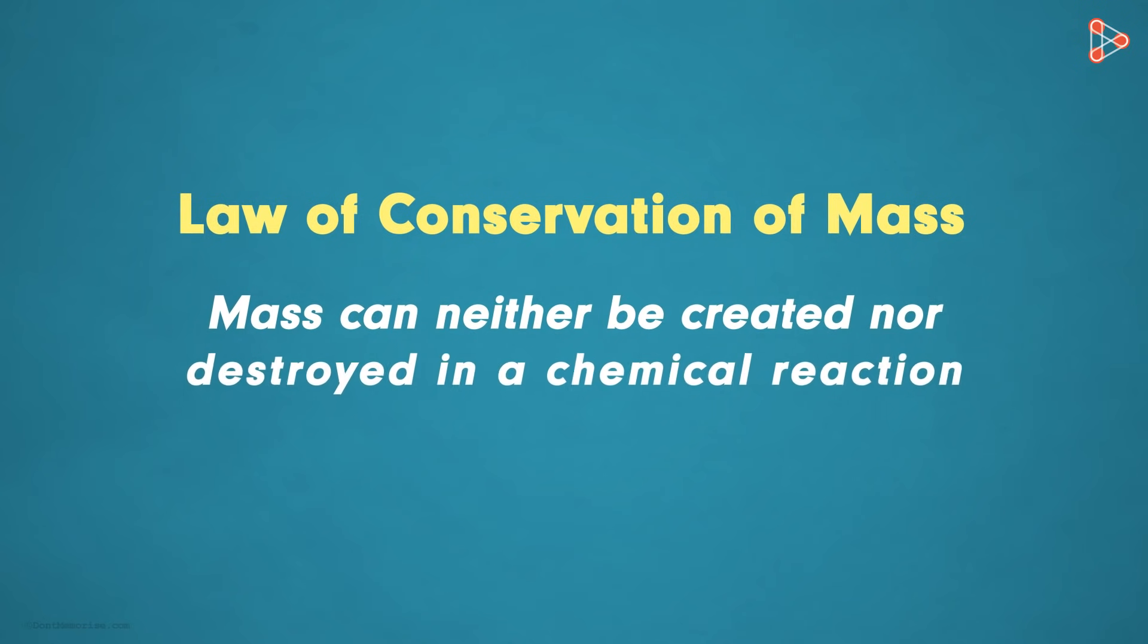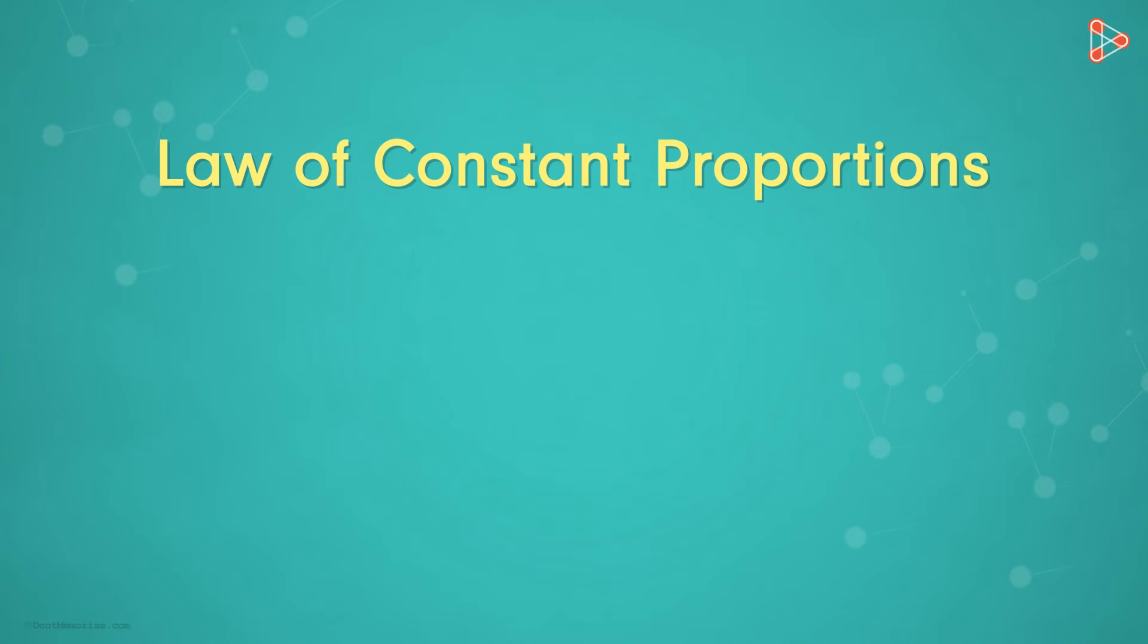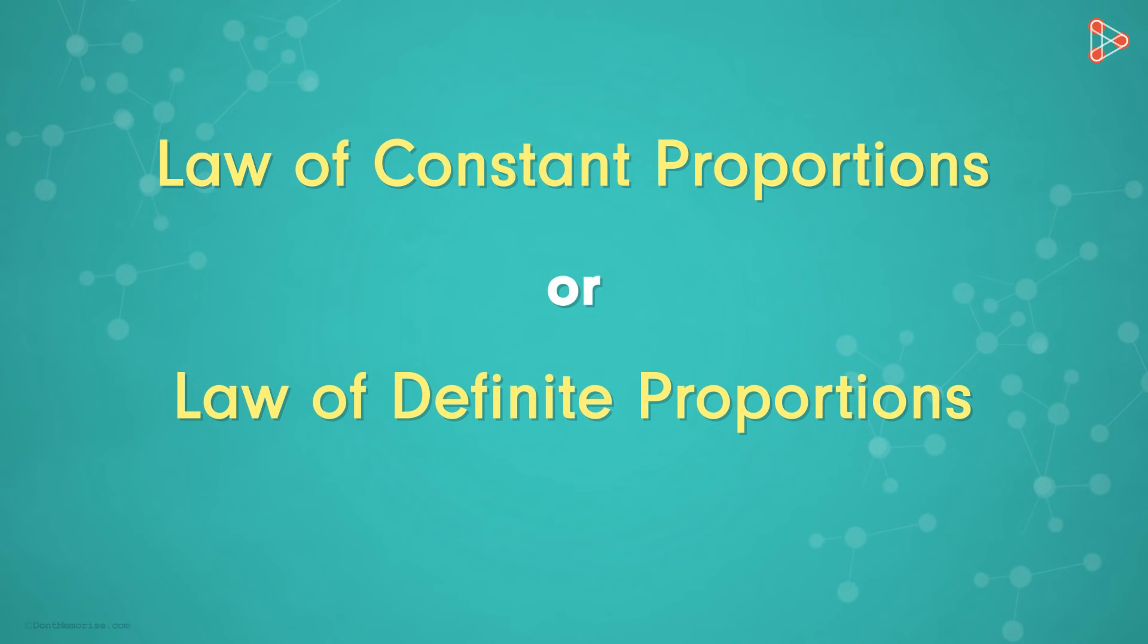We concluded the previous video by understanding the first law of chemical combination. Now we need to take a look at the second law which is called the Law of Constant Proportions or the Law of Definite Proportions.